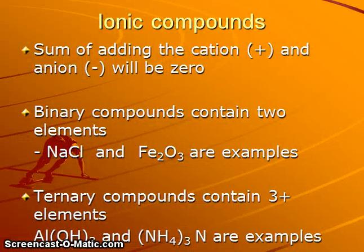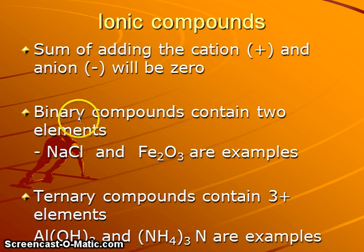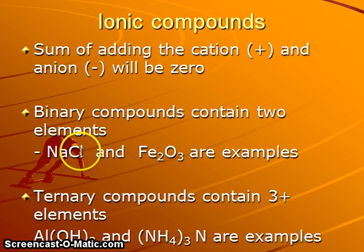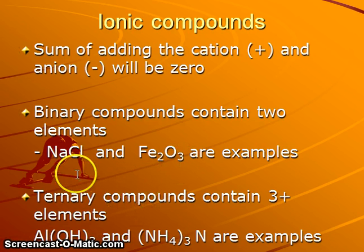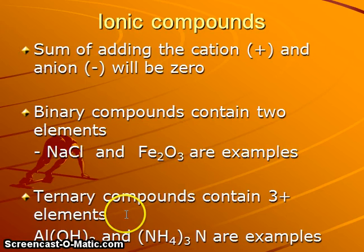Ionic compounds are the result of a cation being attracted to an anion. The opposite charges cause electrostatic attraction which will hold the two ions together. Binary compounds are going to consist of two different elements. Sodium chloride and iron oxide are examples of binary compounds — just two elements in the compound.